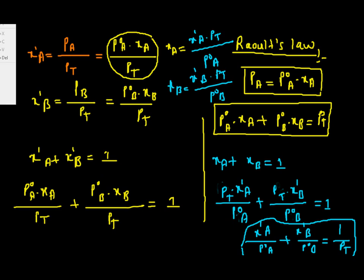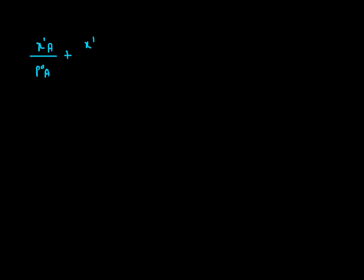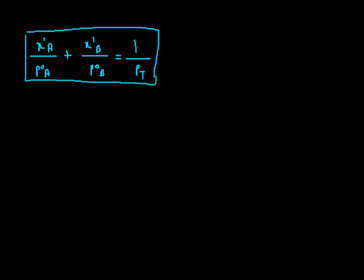Let me write this important formula once more clearly. We have: x'A / P°a + x'B / P°b = 1 / Ptotal, where Ptotal is the total vapor pressure. This formula is really very important while solving numericals. Instead of x'A and x'B we can also write yA and yB for the mole fractions in vapor phase.